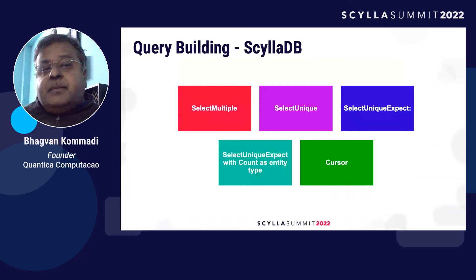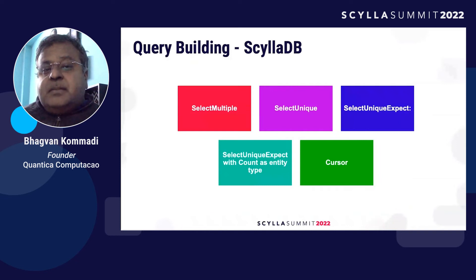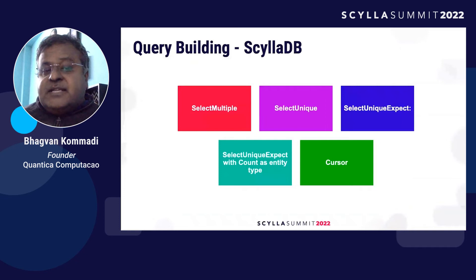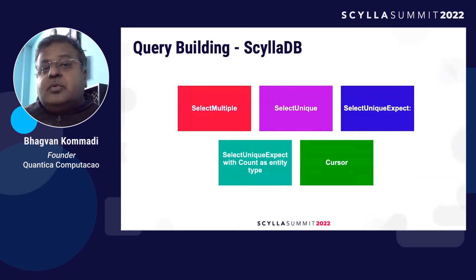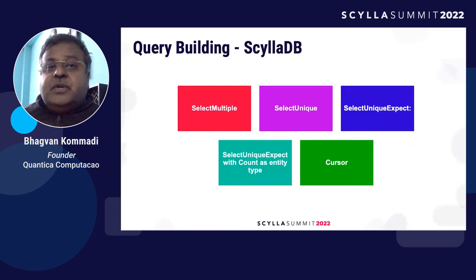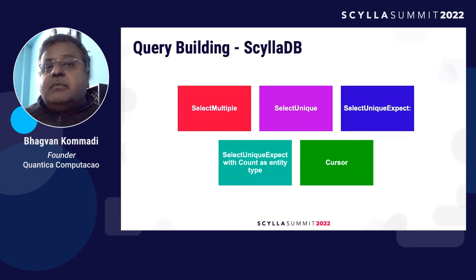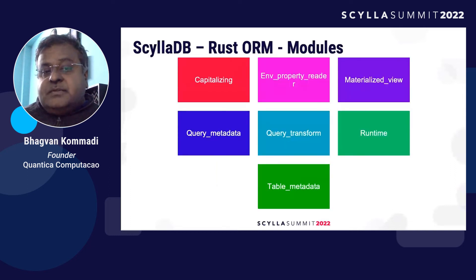Now let's look at query building. With ScyllaDB you can do multiple queries: select multiple, select unique, select unique except, and select unique expect with count — as either an entity type or a cursor type. The cursor is very popular in SQL and also in Java, where you can get query results and traverse through records, accessing different columns and values for each record.